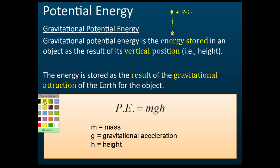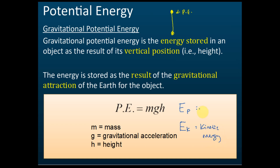PE is the potential energy. Sometimes potential energy is denoted by the symbol e-sub-p. We also learned that kinetic energy is denoted by the symbol e-sub-k. The small letter here is called a subscript, so e-sub-p is potential energy and e-sub-k is kinetic energy. Some books use e-sub-p and e-sub-k, while others just write PE to denote potential energy — it depends on the book.